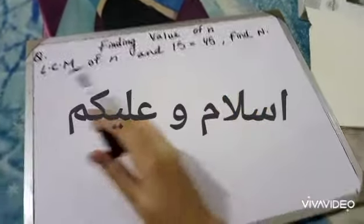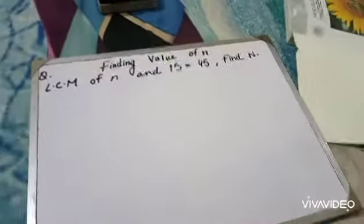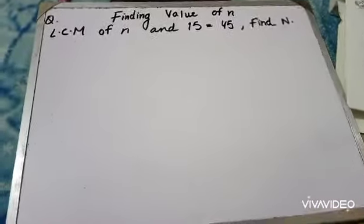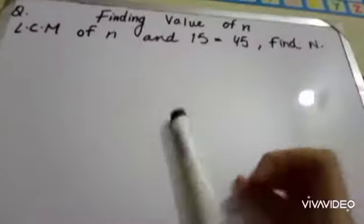Finding value of n. Our question is LCM of n and 15 is equal to 45. Find the value of n. First we need to take the LCM of 15 and 45.